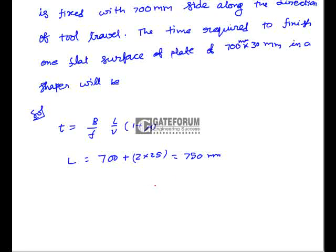Feed rate F = 0.3 mm/stroke, width B = 30 mm. Substituting: time = (30/0.3) · (750/9000) · (1 + 1/2) = 100 · 0.0833 · 1.5 = 12.5 minutes. The right answer is 12.5 minutes, which corresponds to option B.